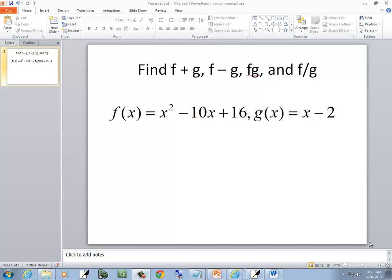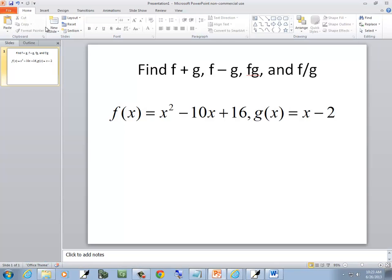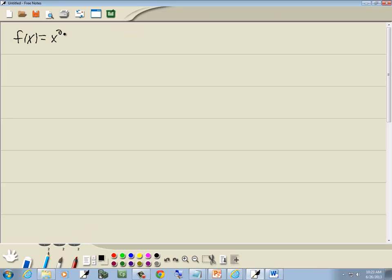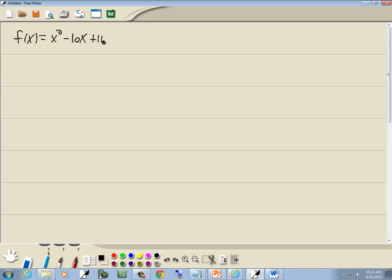In this problem, we want to find f plus g, f minus g, f times g, and f divided by g, given two functions. We have f of x equals x squared minus 10x plus 16, and g of x equals x minus 2.